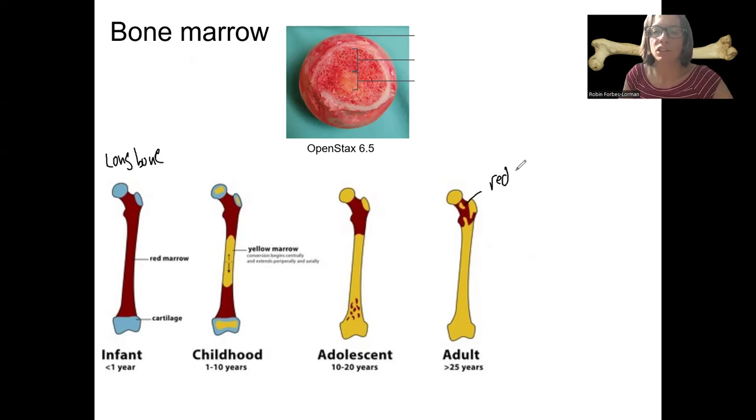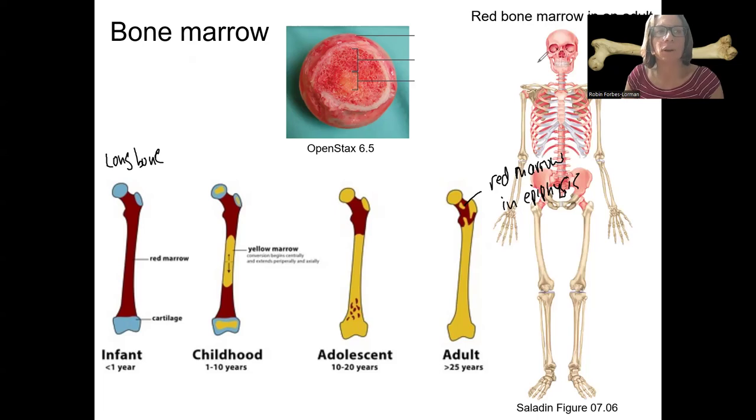In the epiphysis of certain long bones. Femur and humerus are two big ones, but they have a large head like that. They're also located, actually, I have a picture of this that I will bring up. The other places that red bone marrow is located, again, these other bones are other shapes.